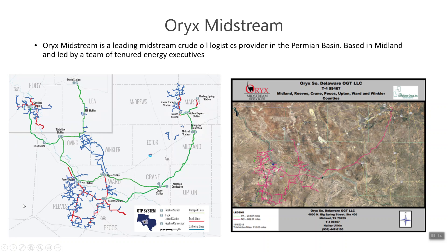When we look at their website, we start to see some counties — we see Andrews and Martin, Ward, Reeves up in the Loving area, and then Eddy. That becomes our market segmentation — we're looking at different geographic areas, and within those geographic areas they have assets: trucking terminals, pipeline interfaces, pipeline terminals, and pipelines themselves.